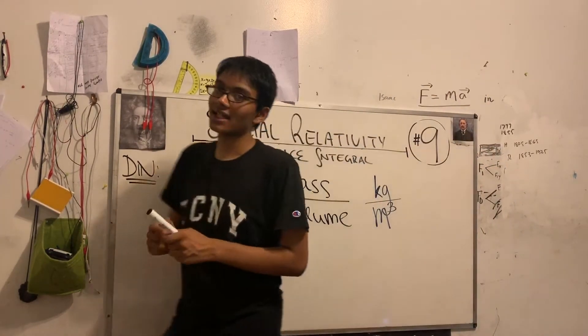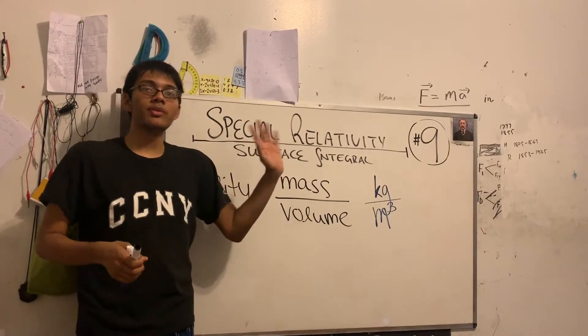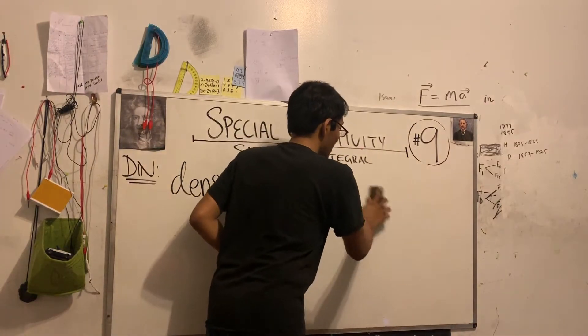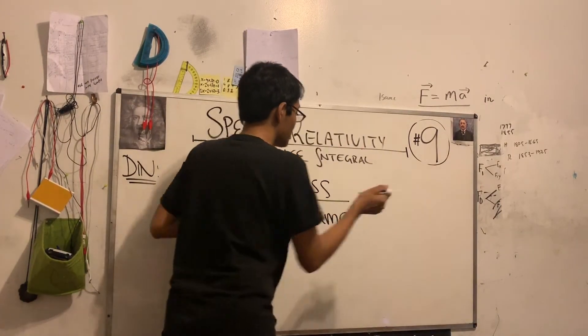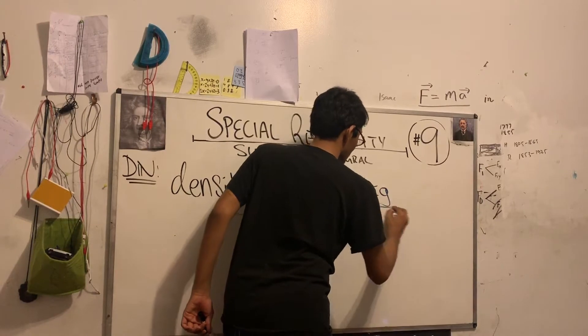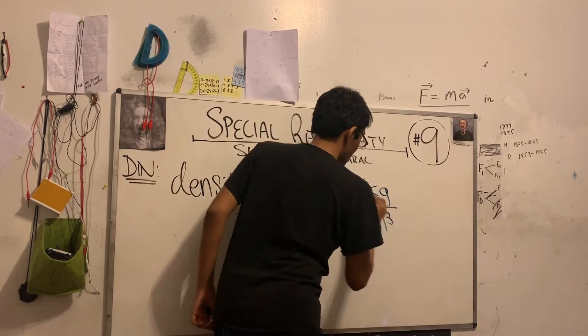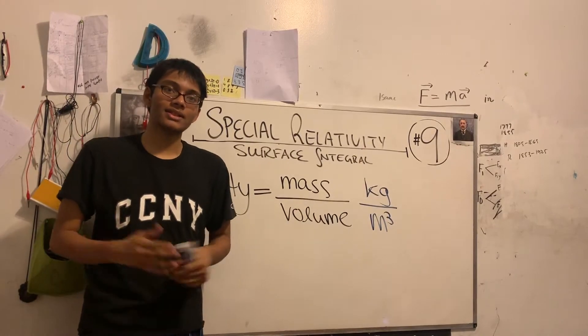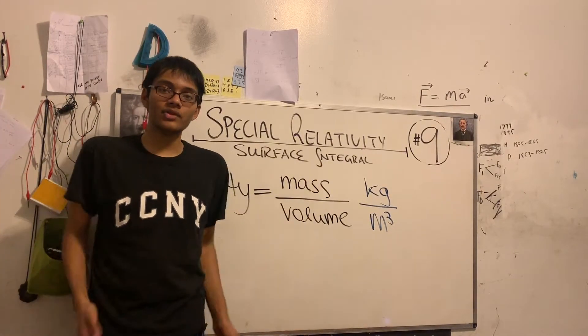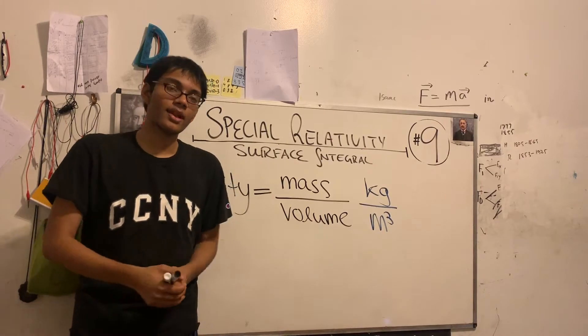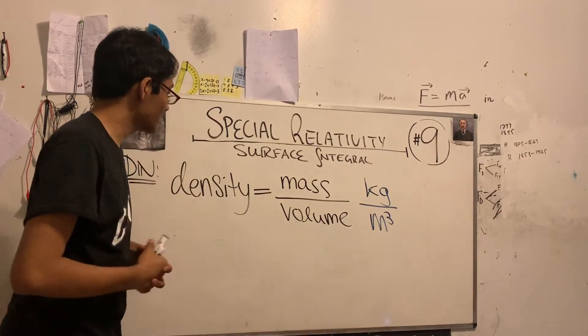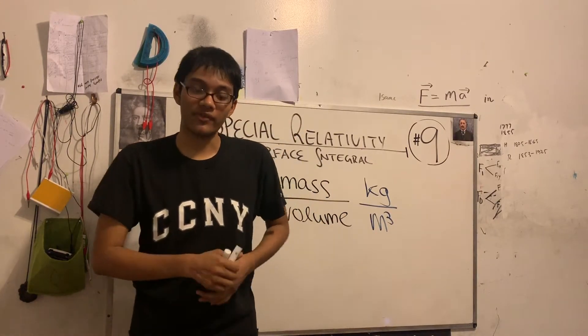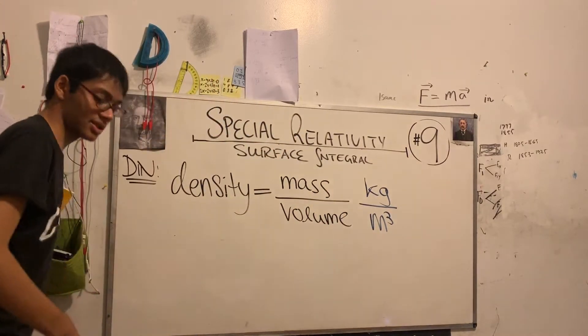So density I can express as kilograms per cubic meters. Now why am I talking about density? Well, what's the point of using surface integrals for density? As it turns out, surface integrals can actually help us find the mass of any variable surface, and here's where we transition into the lesson.